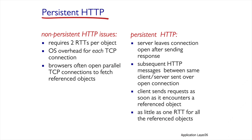The reaction time in persistent HTTP protocol equals one RTT plus the object transmission time, because if this is the second object requested, the connection is already established. In the non-persistent method, several connections are usually opened in parallel to get objects faster, whereas in the persistent method, the server keeps the connection open until the client disconnects.